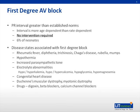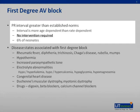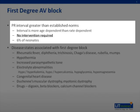In patients with first-degree atrioventricular block, the PR interval is greater than established norms. The PR interval is defined from the beginning of the P wave to the beginning of the QRS complex. The PR interval is more age-dependent than rate-dependent. This finding is typically benign, and no intervention is required. It is a relatively common finding and is present in 6% of neonates.